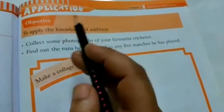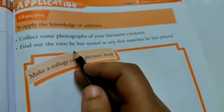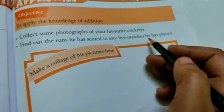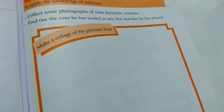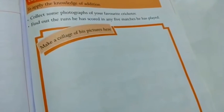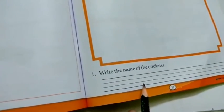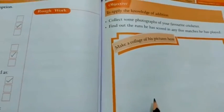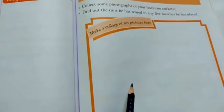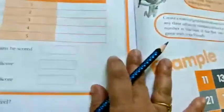Now application. To apply the knowledge of addition, collect some photographs of your favorite cricketer. Find out the runs he has scored in any 5 matches he has played. Make a collage of his pictures here. So what is he telling here? You have to collect some photographs of your favorite cricketer and find out the run he has scored in any 5 matches. And you can write here. And you have to write the name of the cricketer here, stick the photo here, and you have to find out any 5 matches runs of that cricketer which you have pasted and written the name over here.